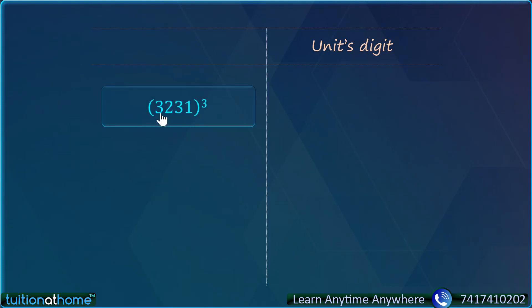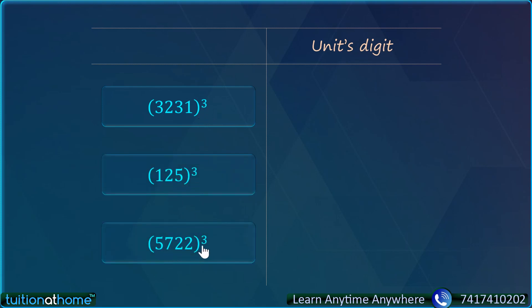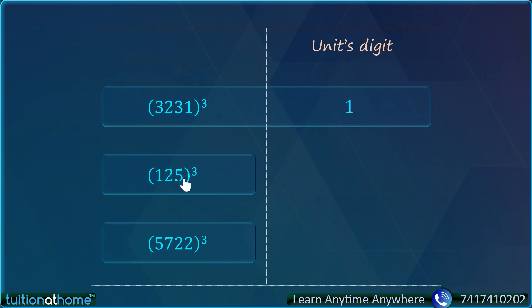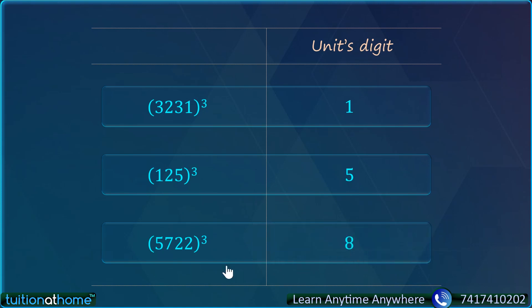If I ask you the unit digit of 3231 whole cube, or 125 whole cube, or 5722 whole cube — what we need to do is just check the last digit and multiply it 3 times. For 3231: last digit is 1, and 1 into 1 into 1 = 1, so unit digit is 1. For 125: last digit is 5, and 5 fives are 25, five 25s are 125, so unit digit is 5. For 5722: last digit is 2, and 2 twos are 4, two 4s are 8, so unit digit is 8. Just check the unit digit, multiply it 3 times and see the unit digit.